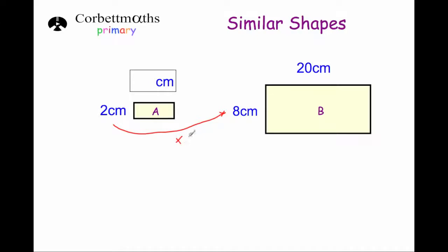So rectangle B has been enlarged by scale factor four — in other words, the lengths and width of rectangle B are four times larger. That means this length has been multiplied by four to get 20. Well, 20 divided by four is five, so the length of rectangle A is five centimetres.